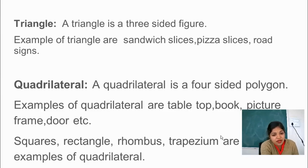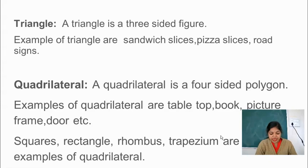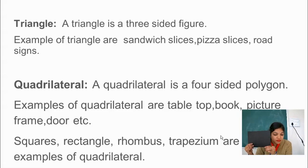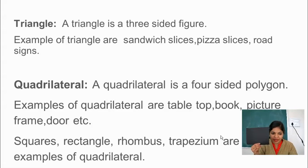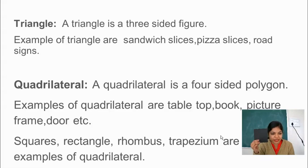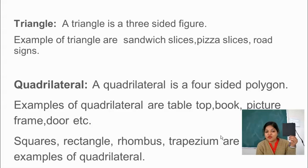What is quadrilateral? A 4 sided polygon is called a quadrilateral. So if I say this is a rectangle — is it a quadrilateral or not? Yes, it is a quadrilateral because it has 4 sides. And this shape also — yes, this is a quadrilateral because it has 4 sides.